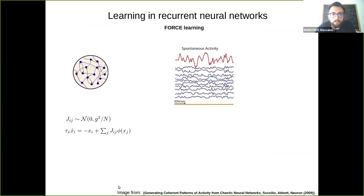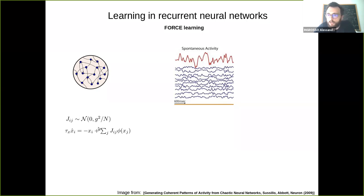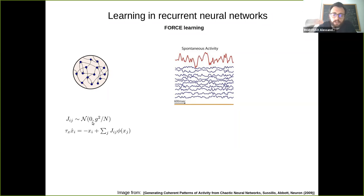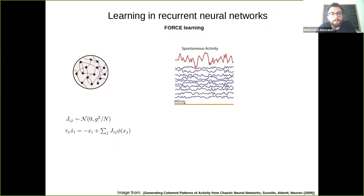To convince you this is an interesting problem, the starting point is training a recurrent neural network. We begin from what I consider the hydrogen atom of theoretical neuroscience: the so-called SCS model, the Sompolinsky-Crisanti-Somers model. Think of this as a continuous-time version of a spin glass — you take a random network, draw Gaussian recurrent weights J_ij scaled with appropriate variance, and the network dynamics chaotically wander through a huge state space.